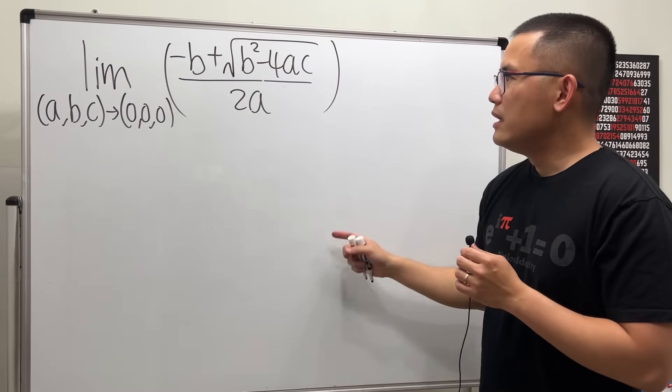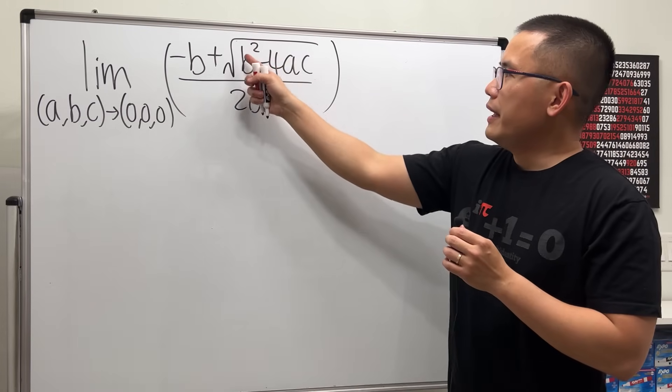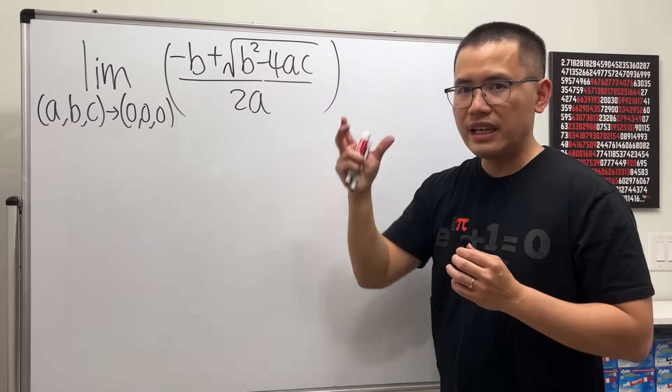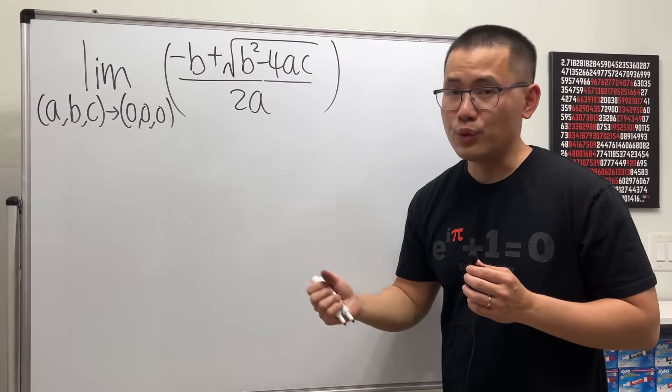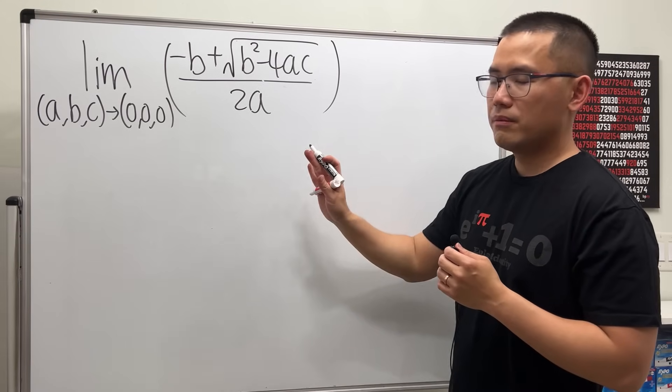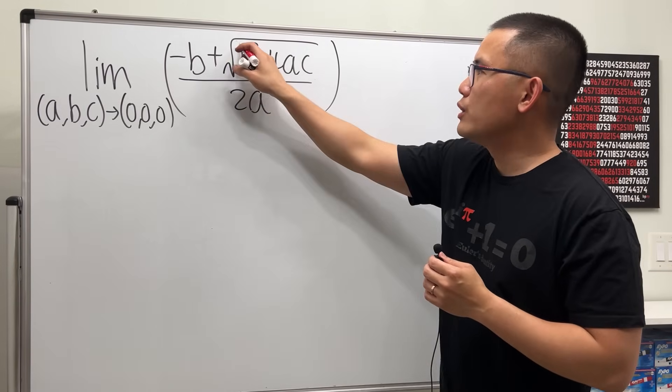And one more thing I want to tell you: the inside right here, if this part is bigger than that, then we'll get a negative inside of the square root, which is not good. We don't want to go to a complex world, but it's okay. I don't want to ruin the fun, I'm just going to attach an absolute value around it, then we'll be good.